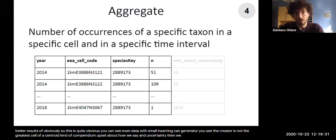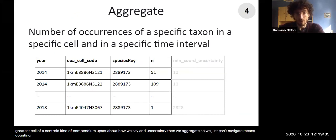Then we aggregate. So we just count. Aggregate means counting. So how many occurrences for a specific taxon in a specific cell in a specific time interval. And for example, here in 2014, for this cell, for this species, we have 51 observations.